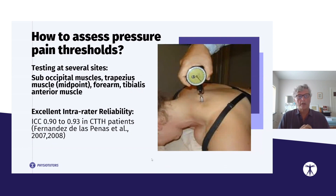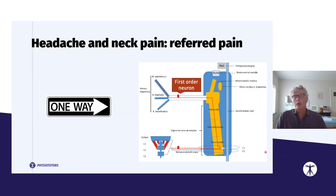As shown here, you have to test the suboccipital muscles and the midpoint of the trapezius. You can also test remote sites such as the forearm and the tibialis anterior muscle. This is a model we have described in a published article.